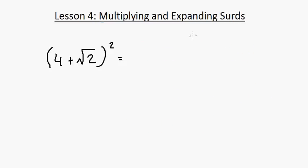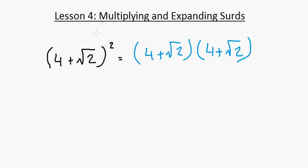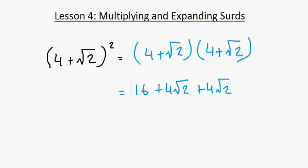Next: 4 plus root 2 all squared, which equals 4 plus root 2 times 4 plus root 2. We get 4 times 4 is 16, 4 times root 2 twice gives 8 root 2, and root 2 times root 2 is 2. So we have 16 plus 2 is 18, and 8 root 2, giving a final answer of 18 plus 8 root 2.